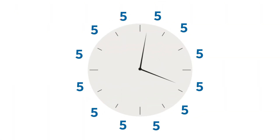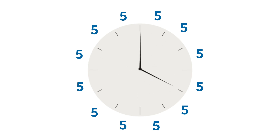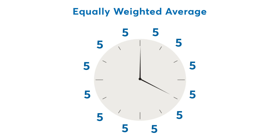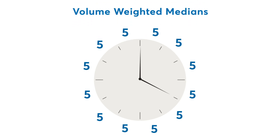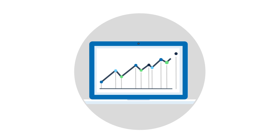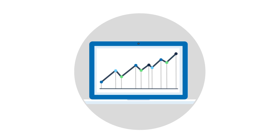This one-hour window is then partitioned into 12 five-minute intervals, where the reference rate is calculated as the equally weighted average of the volume-weighted medians of all 12 partitions. The reference rates are calculated using the most liquid time window for the cryptocurrency pair.